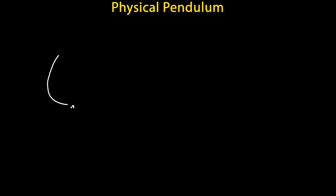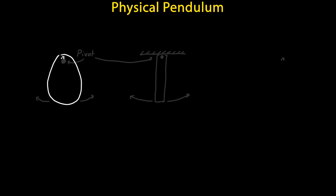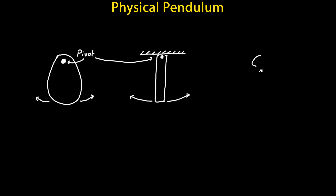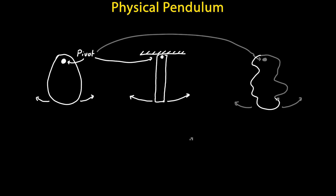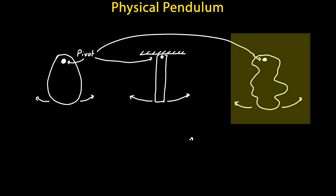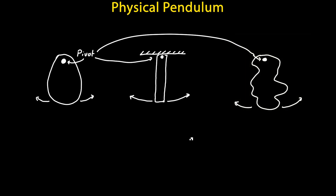So what is a physical pendulum? A physical pendulum can be any rigid object that is free to oscillate about some fixed axis. All of these here are examples of physical pendulums. And I've drawn another pendulum here that has some kind of random shape, just to indicate that physical pendulums can have all different types of shapes.